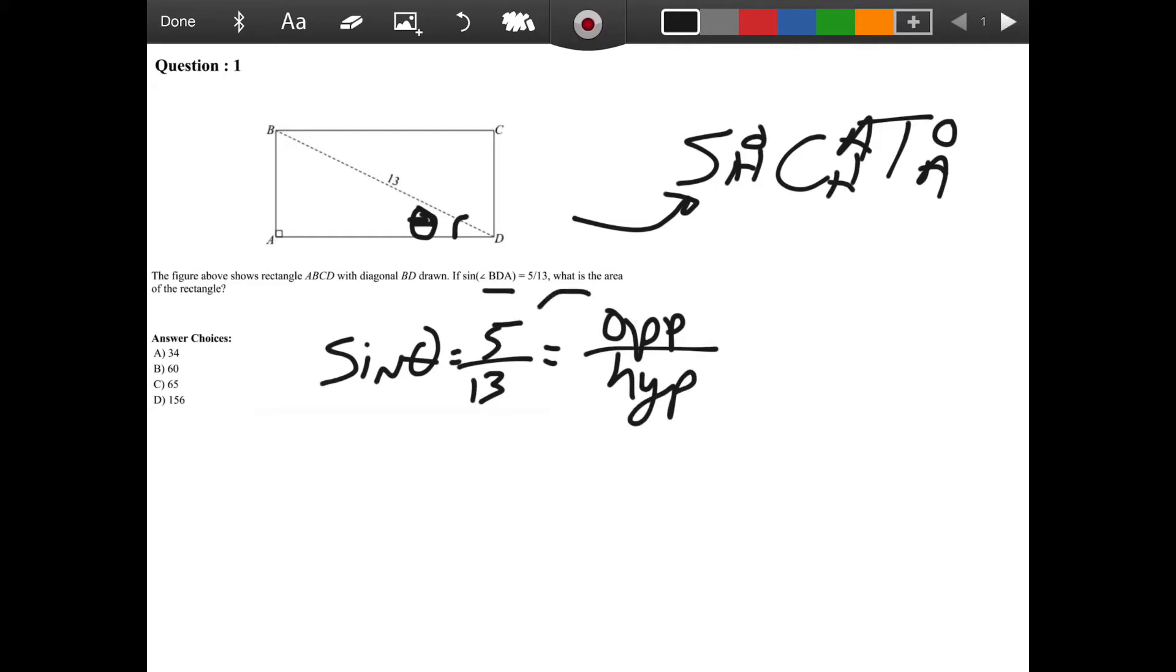So in this case, 5 lines up with the opposite side of the angle, so the opposite side of the angle is 5, and the hypotenuse we know is 13. Now, what we have to realize here is since this is a right triangle, we can do Pythagorean theorem.